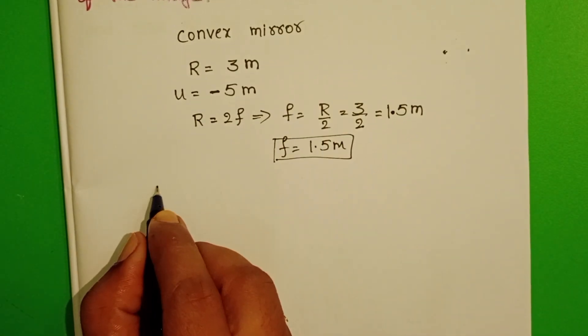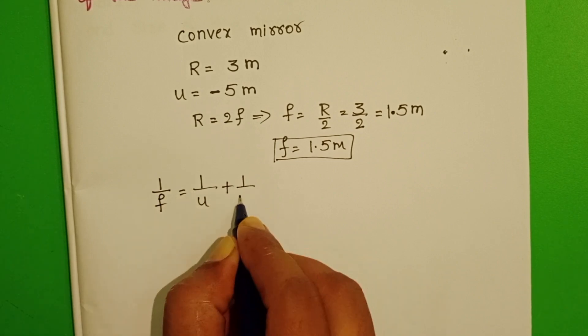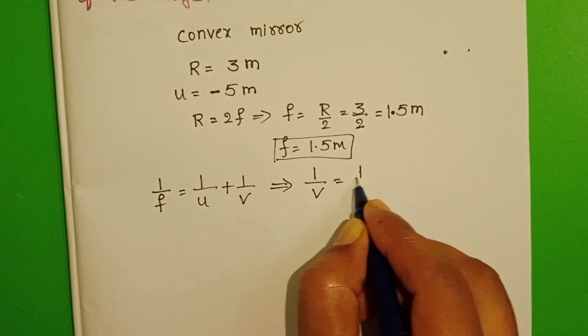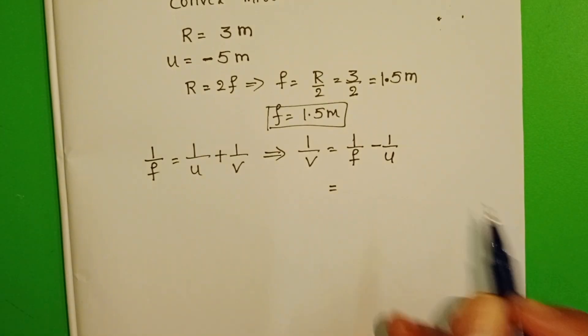Take the mirror formula: 1 by F equals 1 by U plus 1 by V. From this, 1 by V equals 1 by F minus 1 by U. Substitute the values.